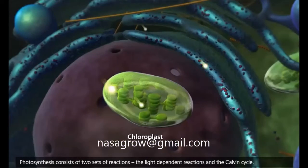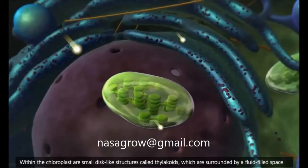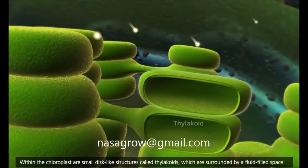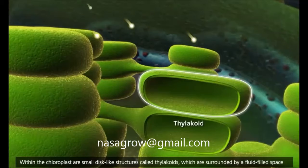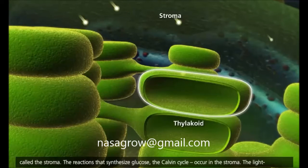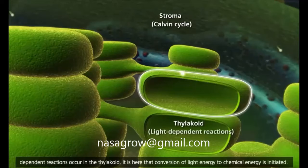Photosynthesis consists of two sets of reactions, the light-dependent reactions and the Calvin cycle. Within the chloroplast are small disc-like structures called thylakoids, which are surrounded by a fluid-filled space called the stroma. The reactions that synthesize glucose, the Calvin cycle, occur in the stroma. The light-dependent reactions occur in the thylakoid.